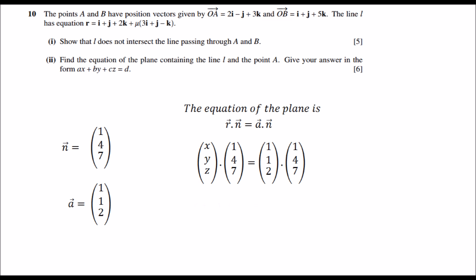Now simple dot product. Using that, we get x + 4y + 7z = 19. So we got the equation of the plane in the Cartesian form. I hope that was helpful. Thank you and see you again.